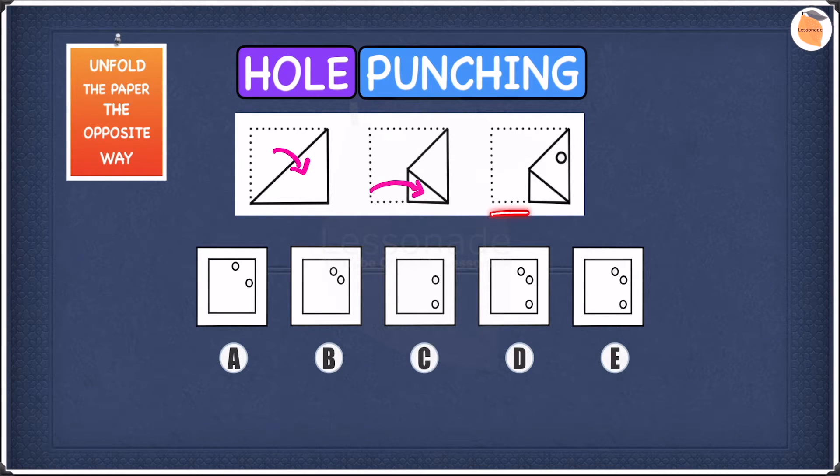And finally, in the third figure, a hole has been punched in the top right hand side of the paper. So now we know how the paper has been folded. Now let's unfold figure 3 to find our answer.